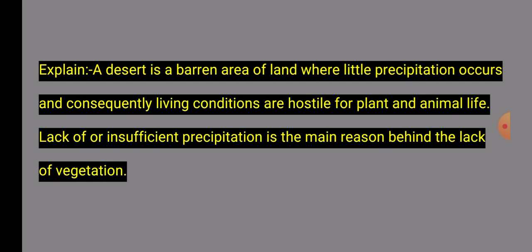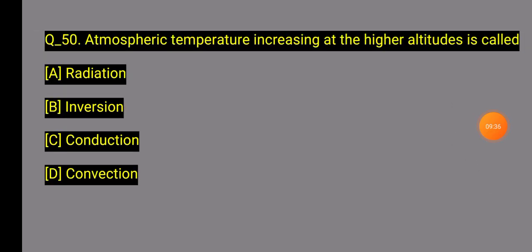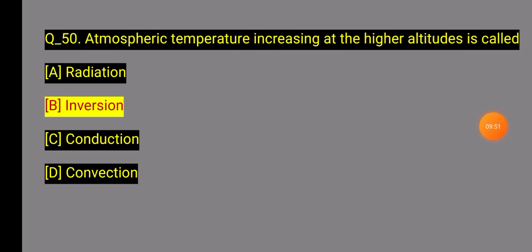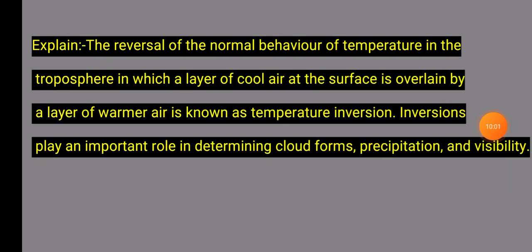Question 50: Atmospheric temperature increasing at higher altitudes is called what? Option B: Temperature Inversion. Question 50 Explanation: The reversal of the normal behavior of temperature — where a layer of warmer air overlies cooler surface air — is known as temperature inversion. Temperature inversion plays an important role in determining cloud formation and visibility.